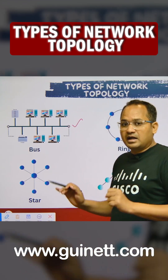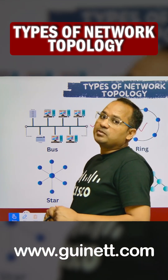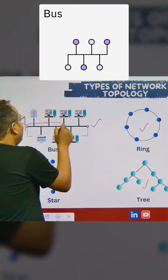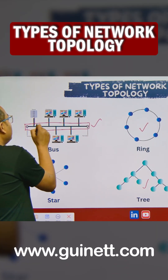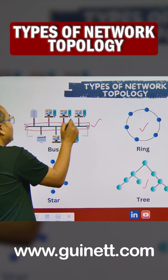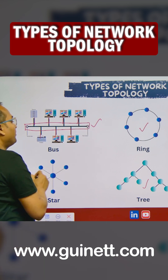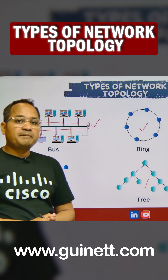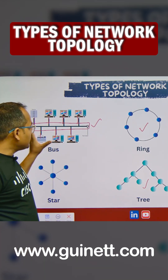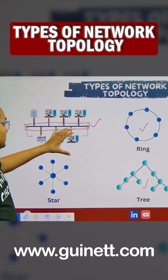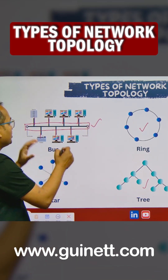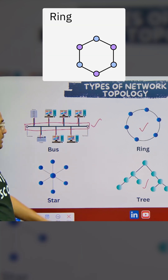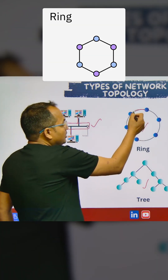Bus topology basically means you have one backbone cable on which multiple devices are going to be connected. Think of a switch, but this is not a switch — this is a non-intelligent device. Devices are connected in series, meaning one backbone cable is going to be there and based on that the connectivity is going to happen. I'll explain step by step.